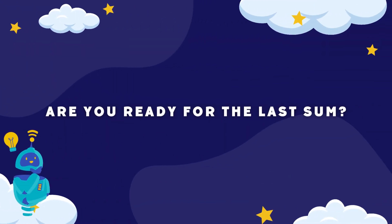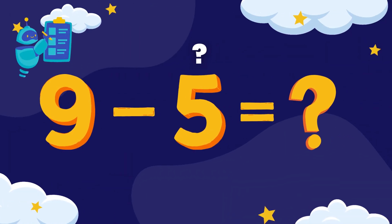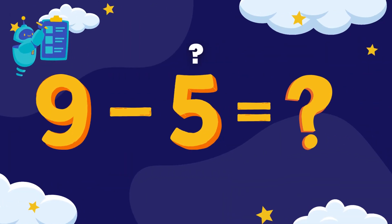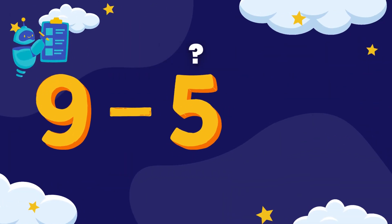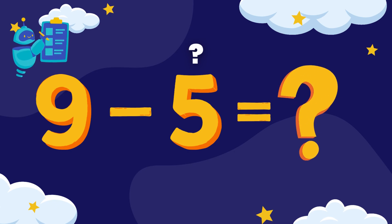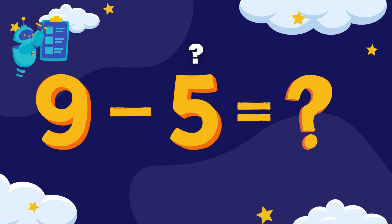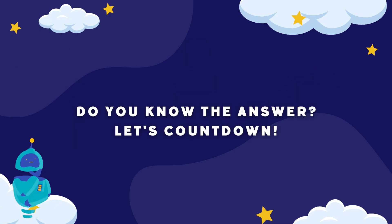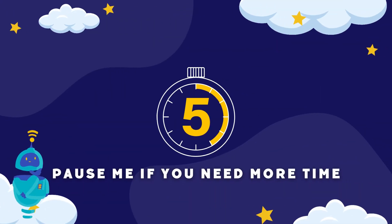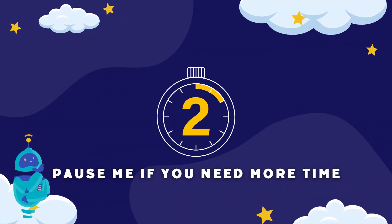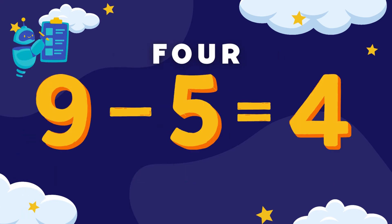So are you ready for the last sum? What is nine minus five? Nine minus five equals... The answer is four.